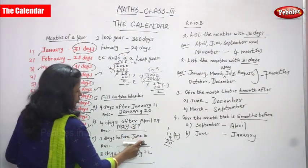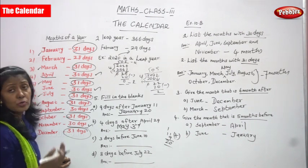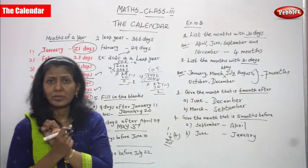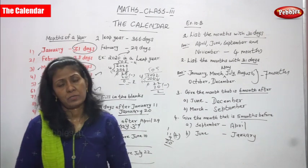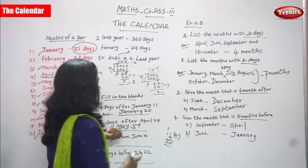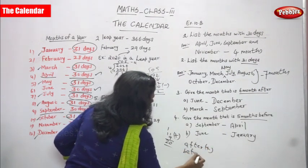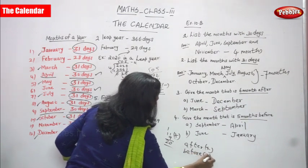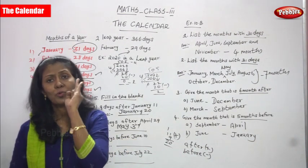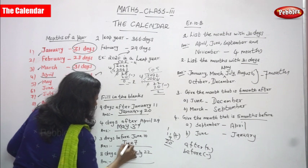3 days before June 10. 'Before' means subtraction. You should not consider June 10. Count back: June 9, June 8, June 7. The answer is June 7. Simply: 10 minus 3 equals 7, so June 7.